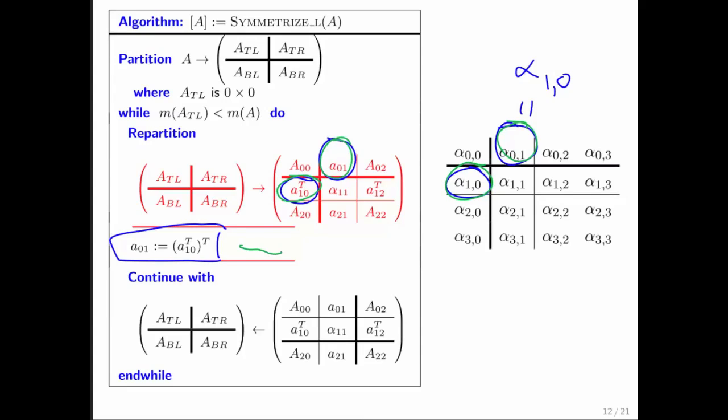And this is the statement that does that. You take your A 1, 0 transpose. That's this row vector right here. You transpose it to make it into a column vector. And you then write that out right here as a column. So that update happens right here.